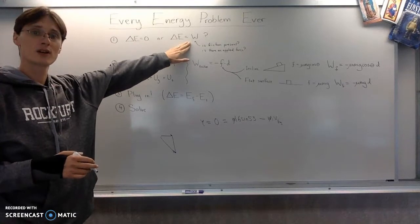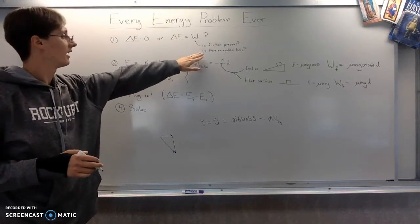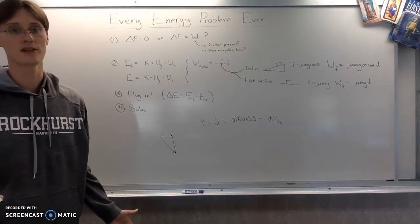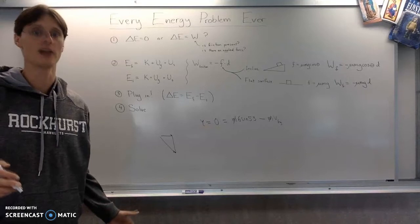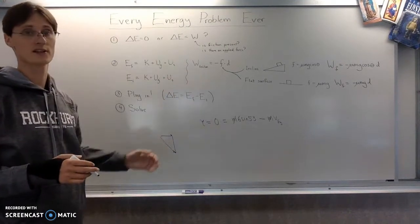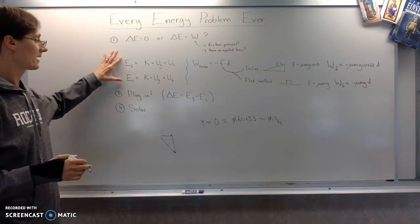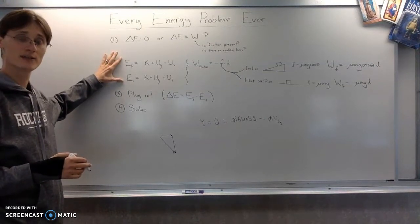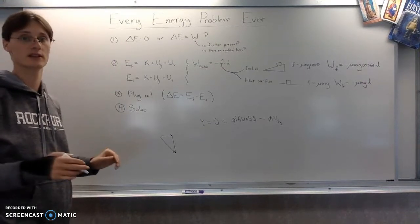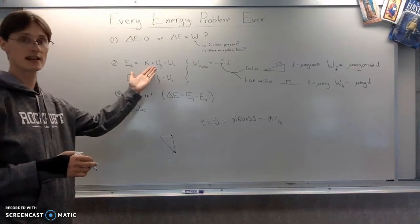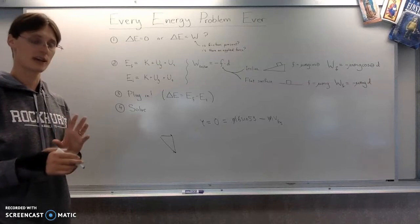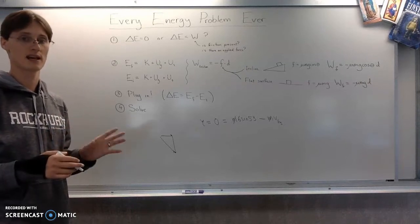You're only going to have work if there is friction present. In theory, there could be a problem where I give you an applied force, but I haven't done those in a while. So it's going to be if there's friction, then it's delta E equals work. Step two is decide what kind of energy is present at each of the two or three moments that you're looking at out of your list of kinetic, gravitational potential energy, and elastic potential energy, bearing in mind that you could have more than one type present at a particular moment.